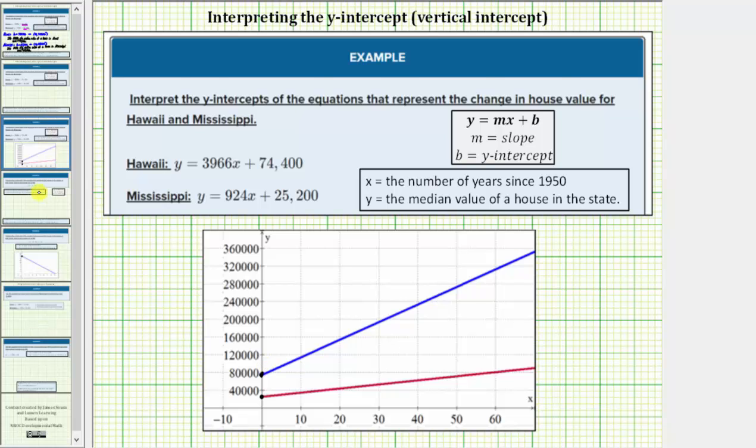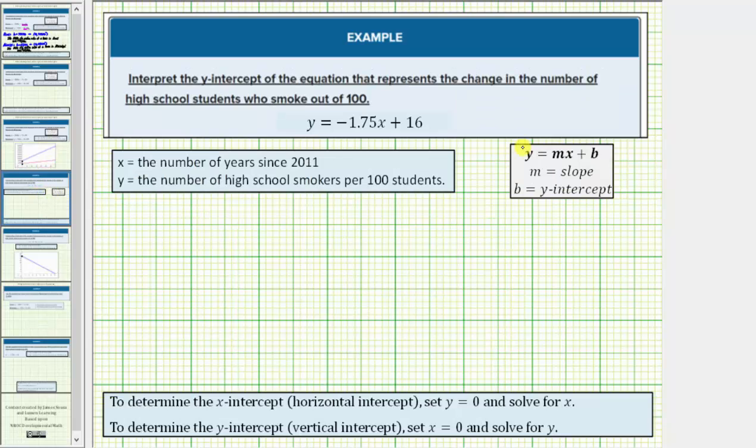Let's look at a second example. We're asked to interpret the y-intercept of the equation that represents the change in the number of high school students who smoke out of every 100 students. For this equation, x equals the number of years since 2011, and y equals the number of high school smokers per 100 students.